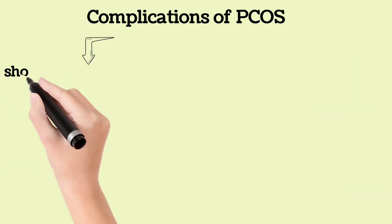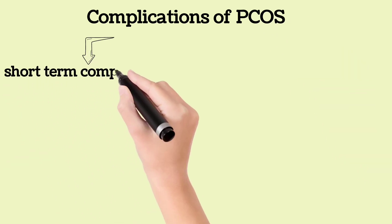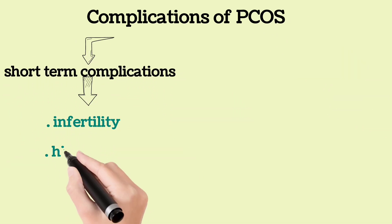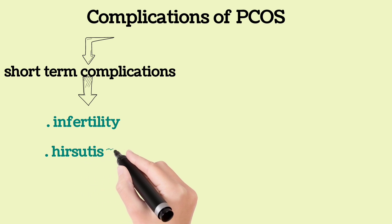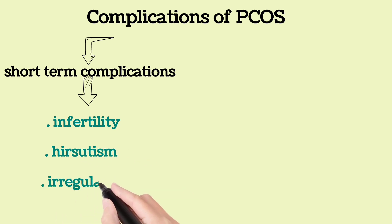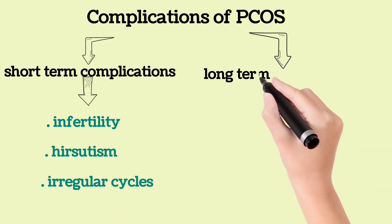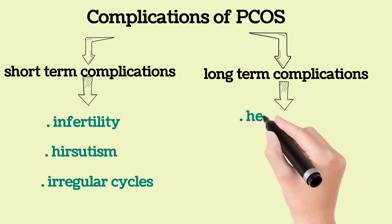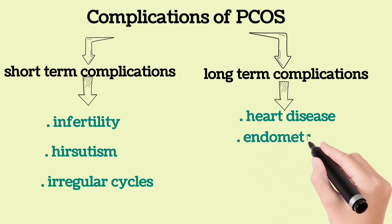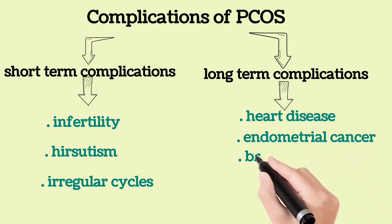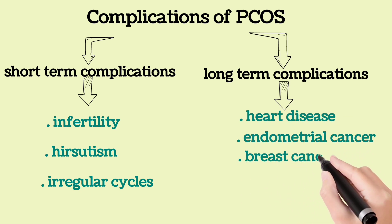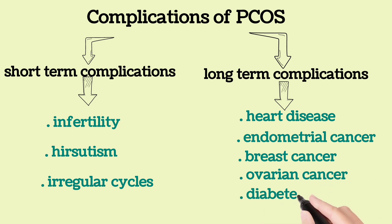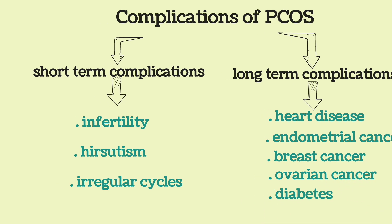Complications of PCOS: short-term complications include infertility, hirsutism, and irregular cycles. Long-term complications are heart disease, endometrial cancer, breast cancer, ovarian cancer, and diabetes mellitus.